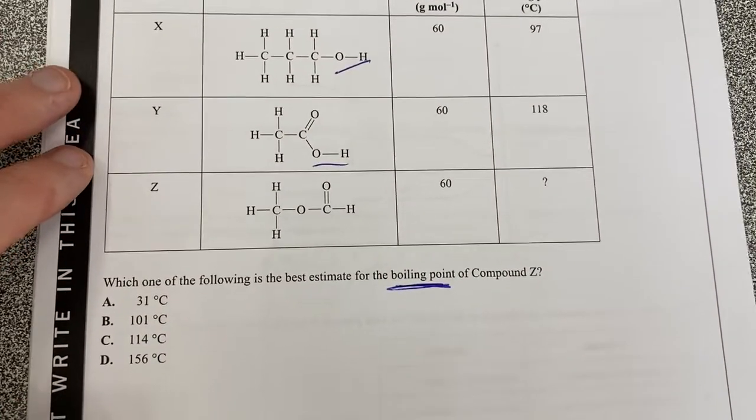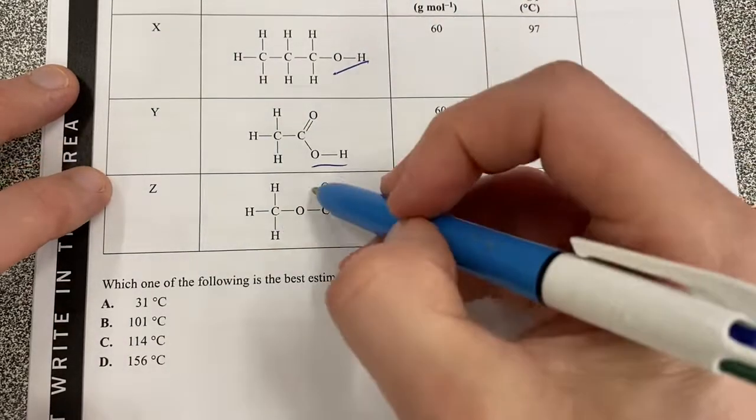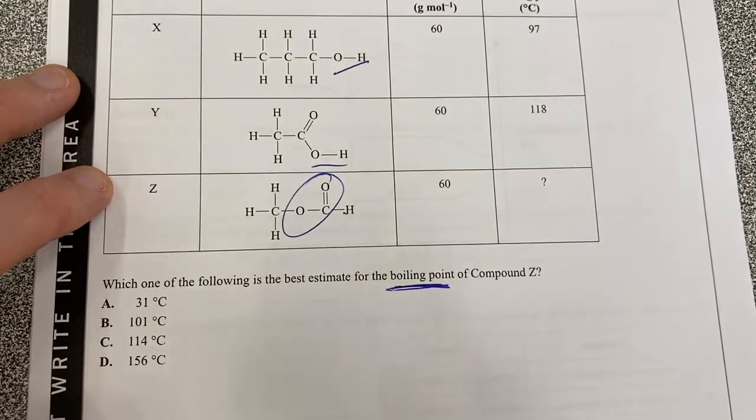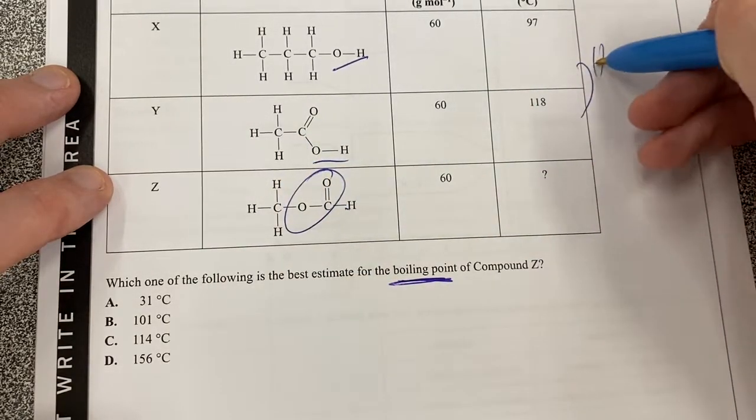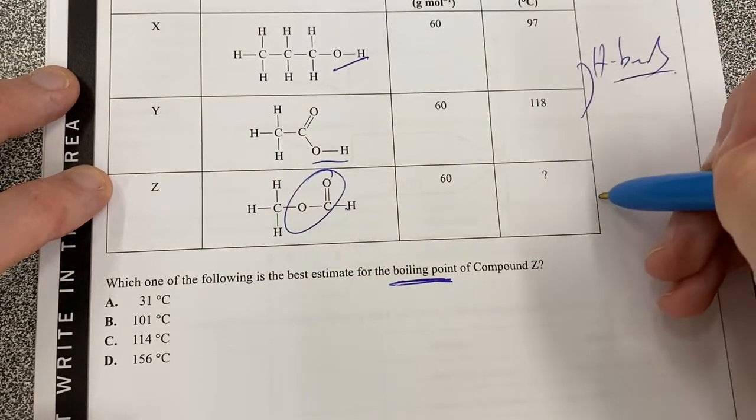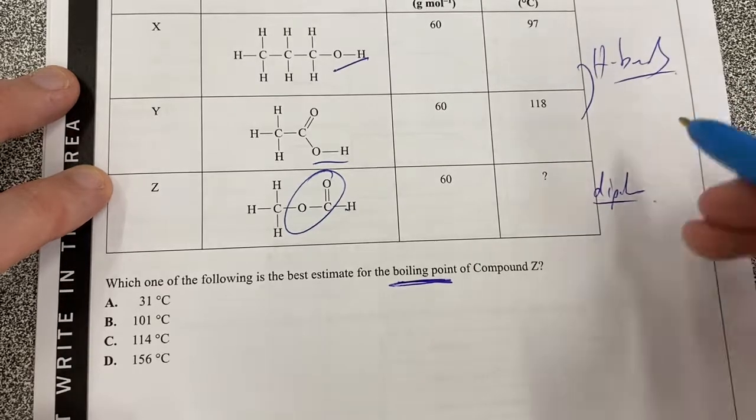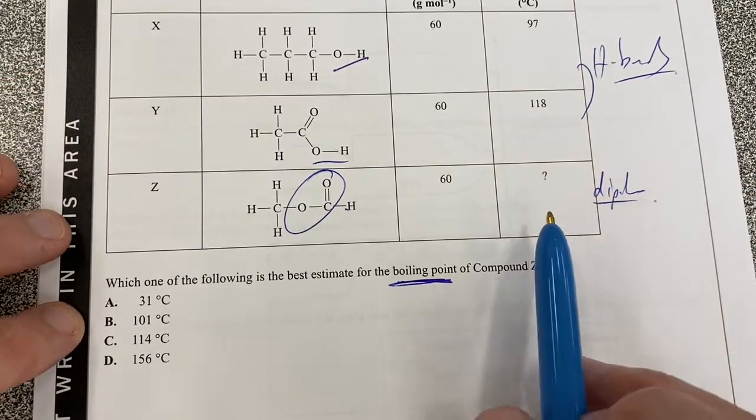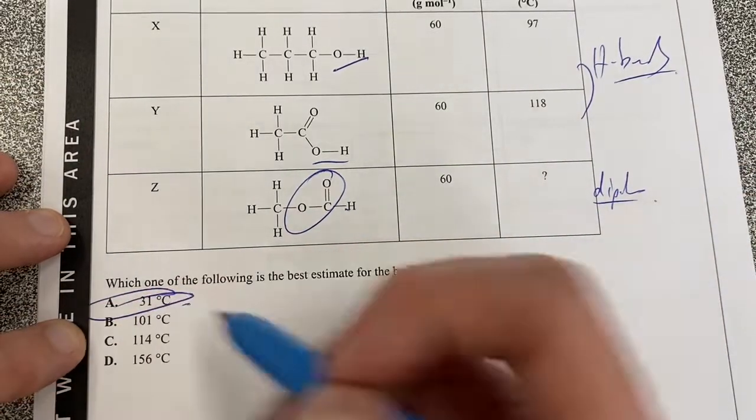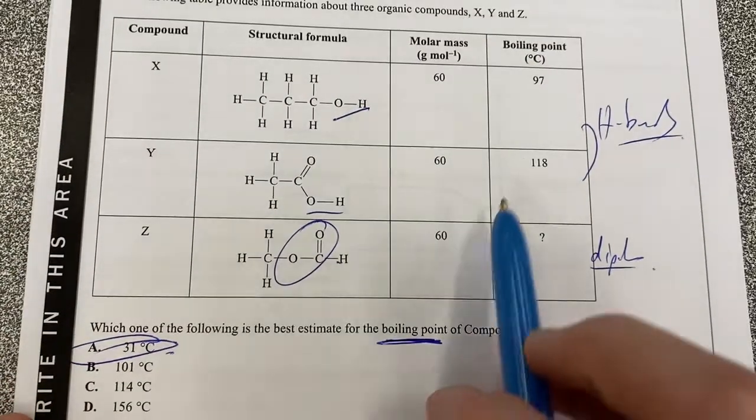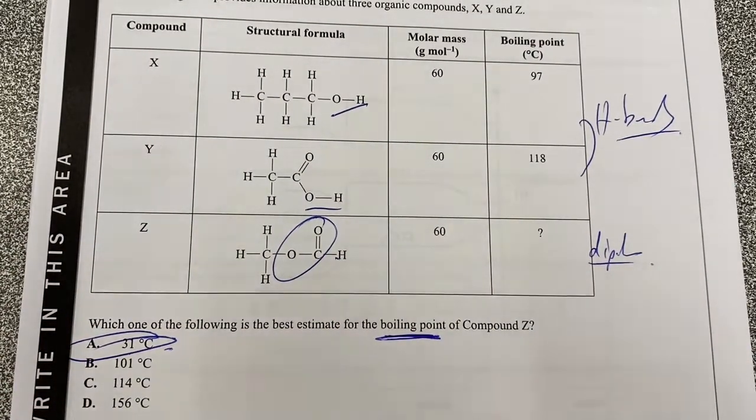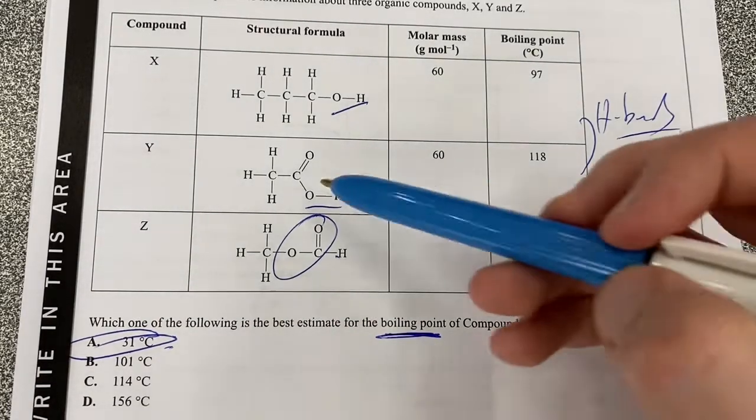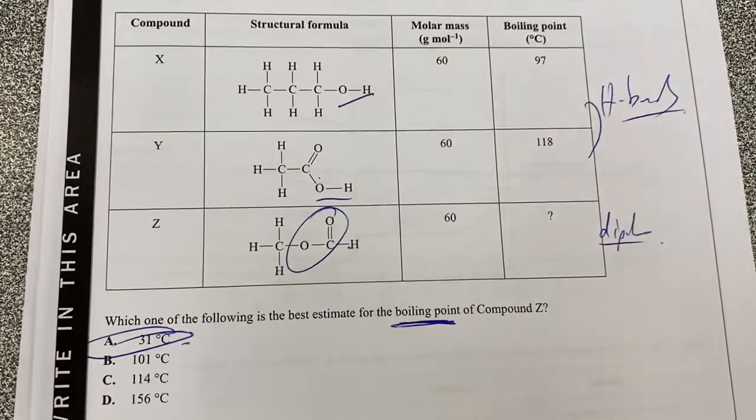So therefore, what should we have? The boiling point of this, which is an ester, it should be below both these two things here, because these guys have H-bonds. This guy only has dipole-dipole forces. So therefore, we're expecting something to be below, it's going to be A, because that is a lower boiling point. The general gist of this is esters have a lower boiling point than the carboxyl or the hydroxyl functional groups.